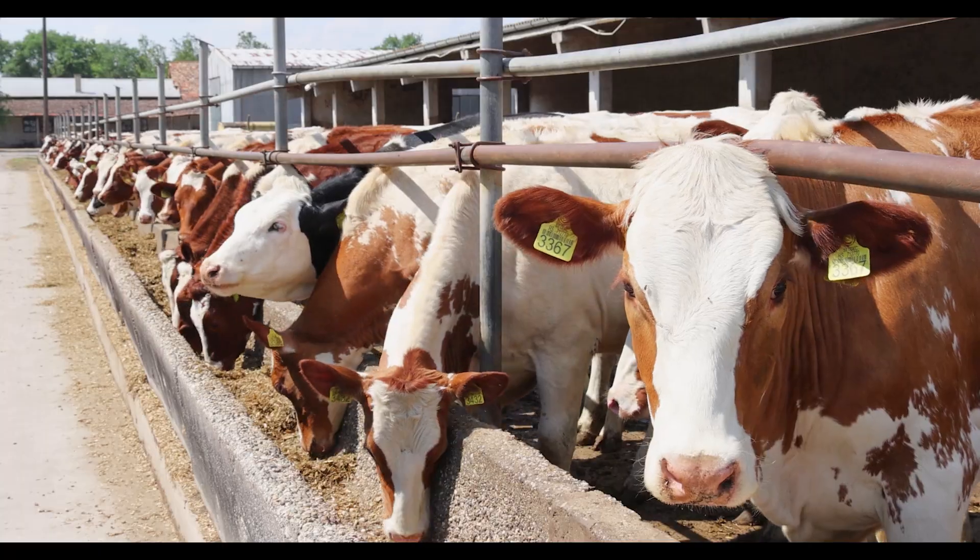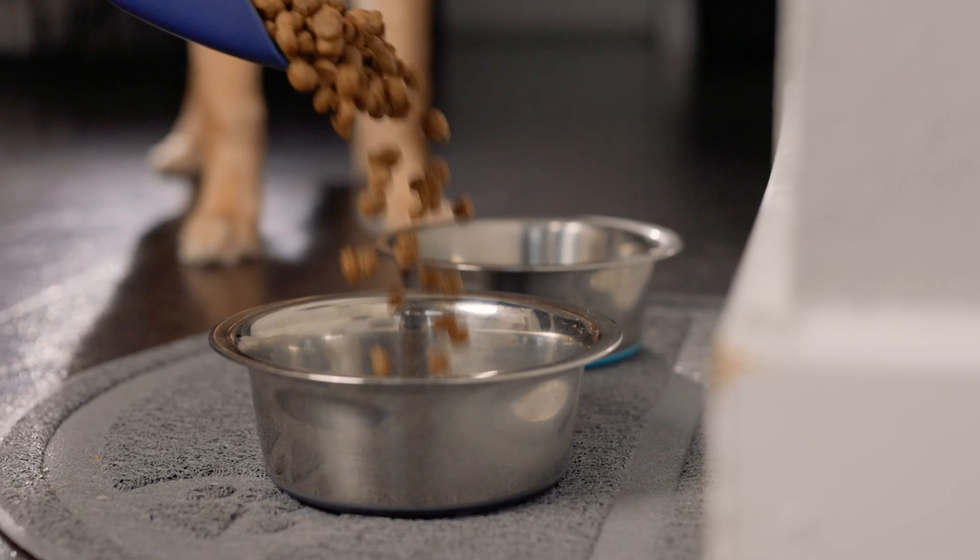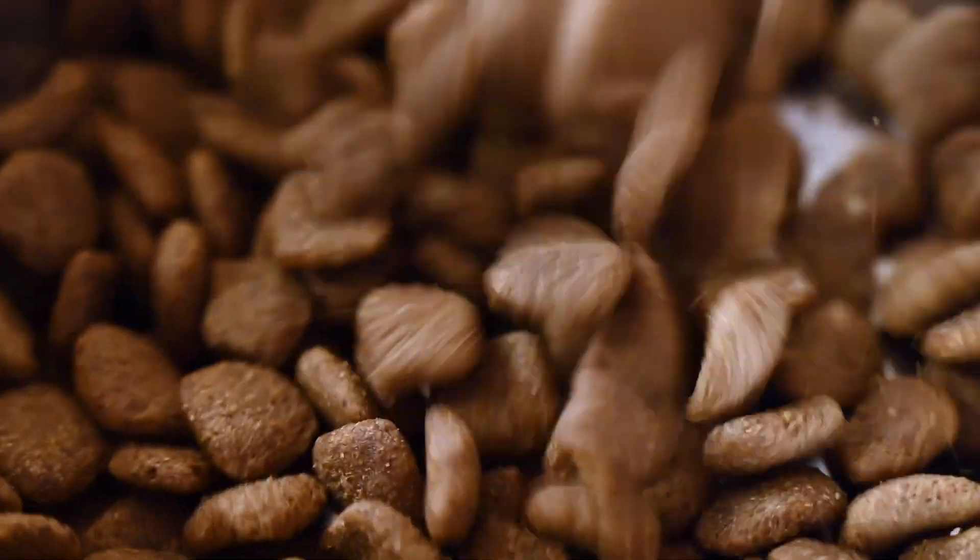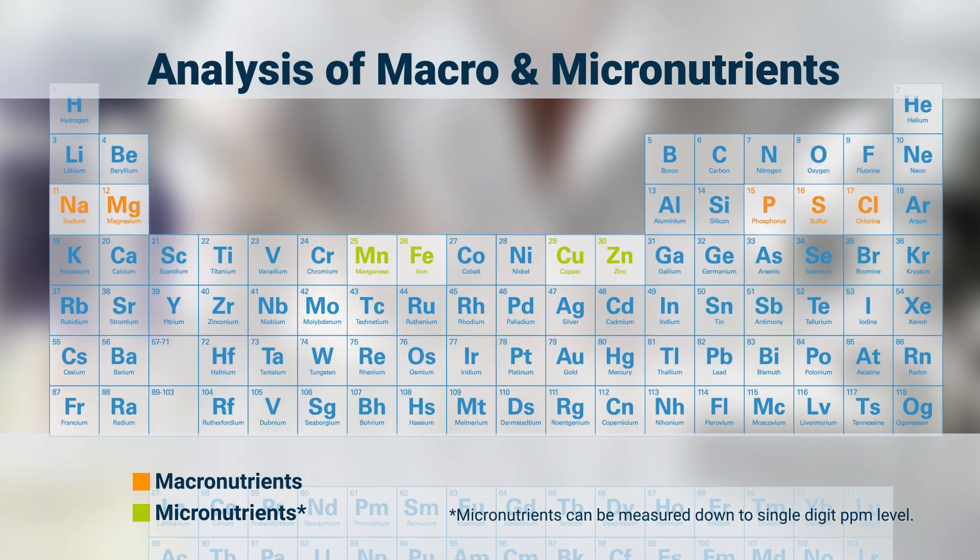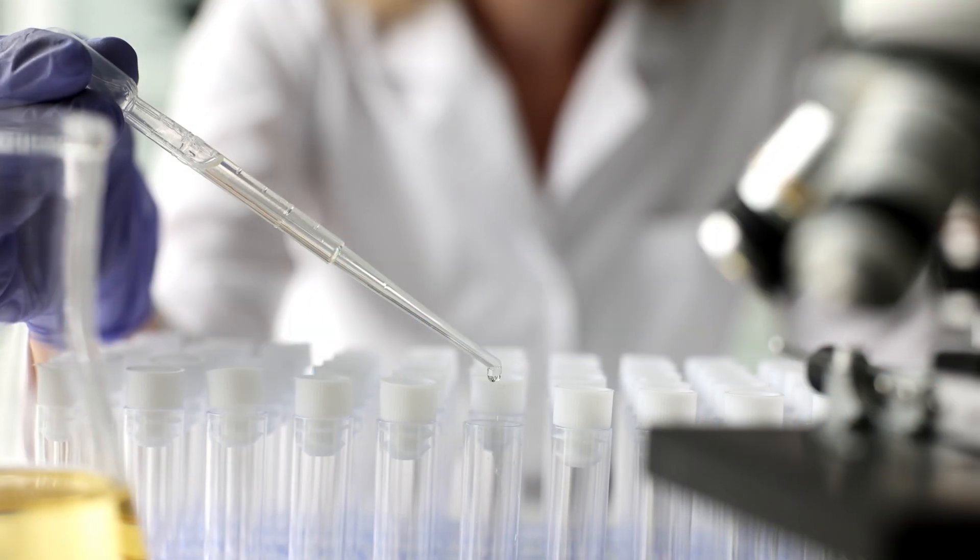Animal nutrition analysis is vital for healthy animals and quality animal products. Traditional methods for analyzing essential elements like sodium, magnesium, potassium and other ingredients often take hours with methods like ICP.